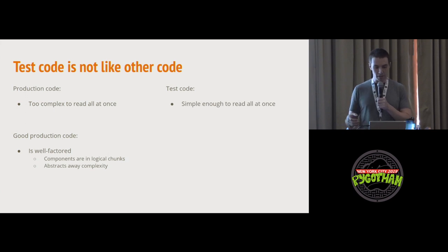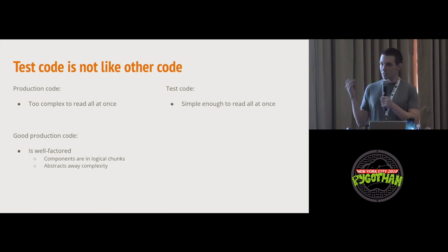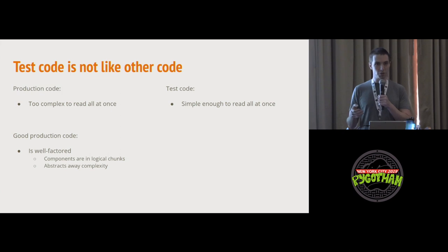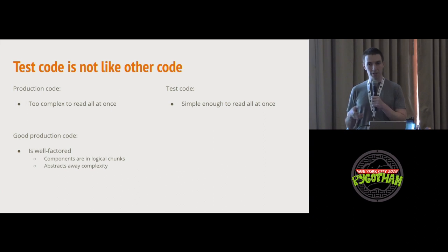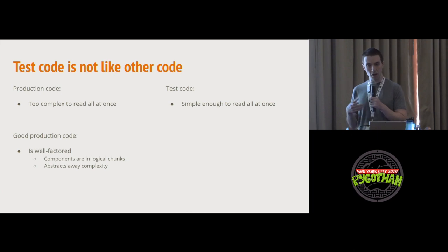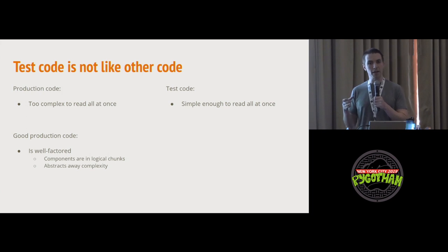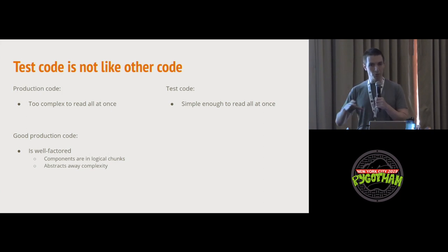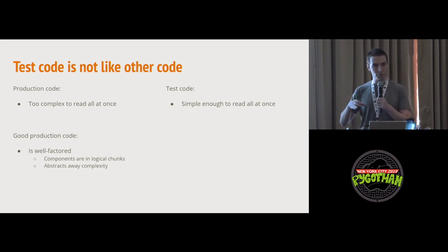Test code is different in that it often is simple enough to read all at once. You wouldn't find a production application that's only 10 lines of code, but if you think about unit tests as little mini applications, they often are that simple. They start up, call generally just one function, and then exit. We can actually get it into just one function where the reader can read top to bottom. We don't need as many mechanisms like helper classes and helper functions if we can just have a straight top-to-bottom read.